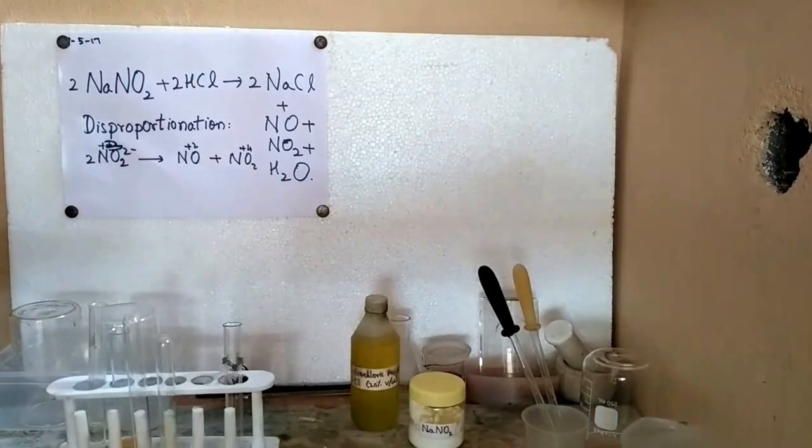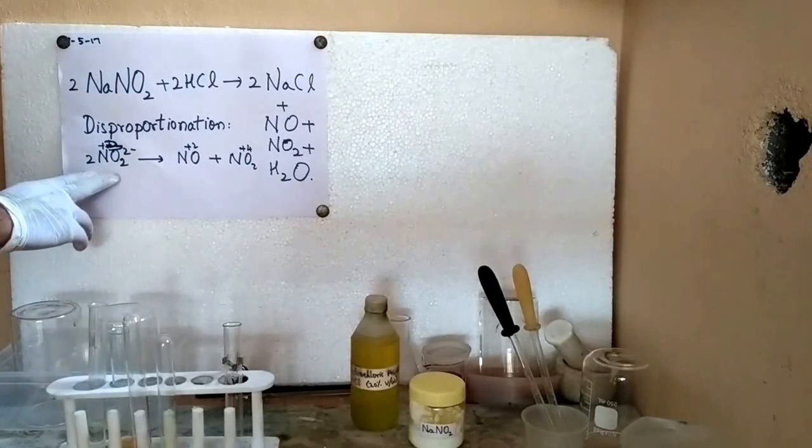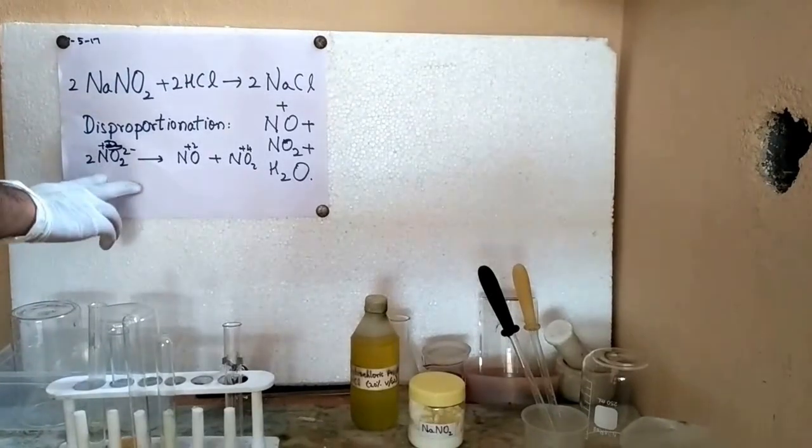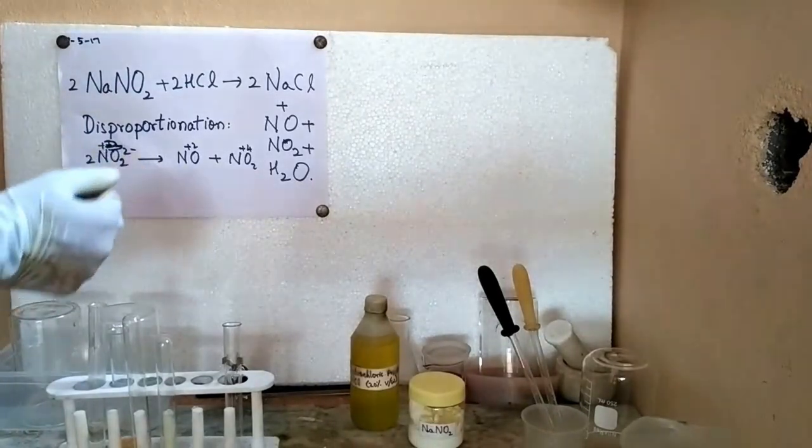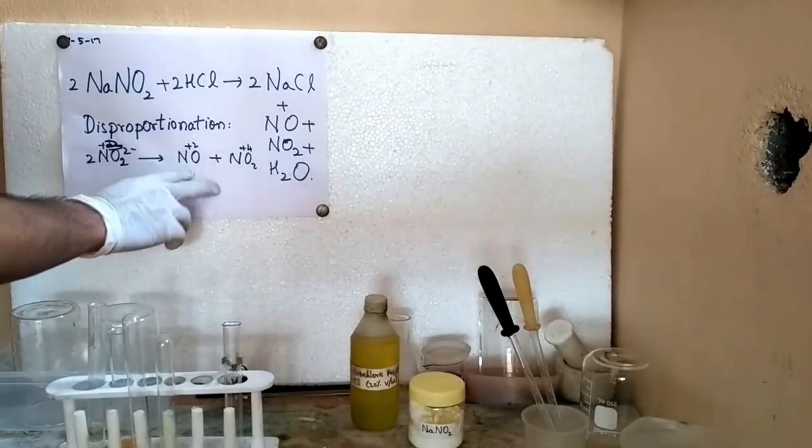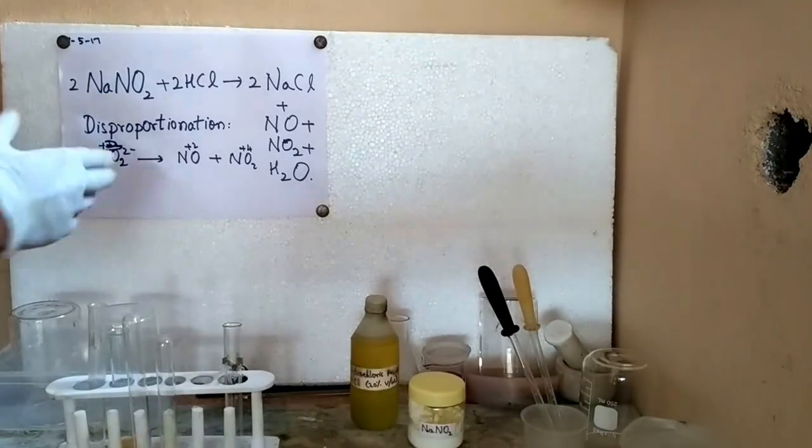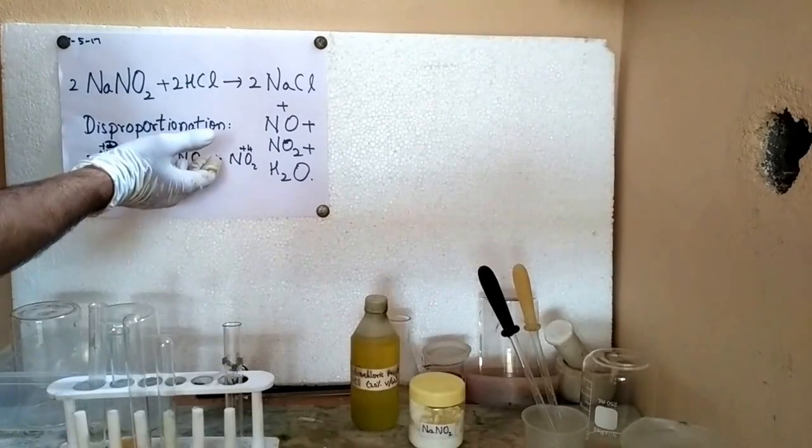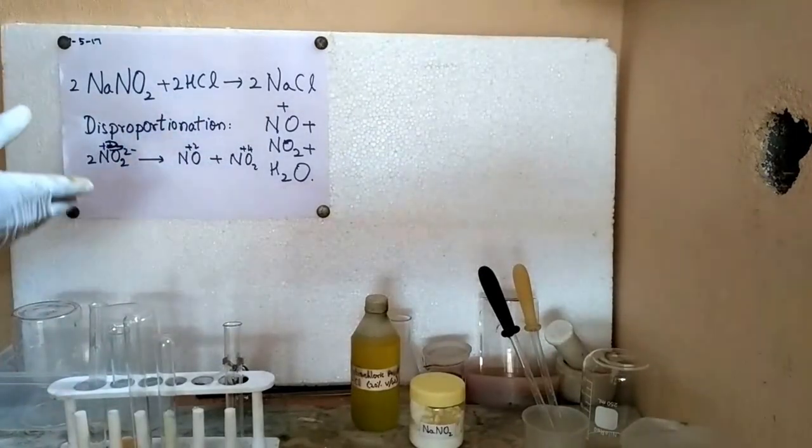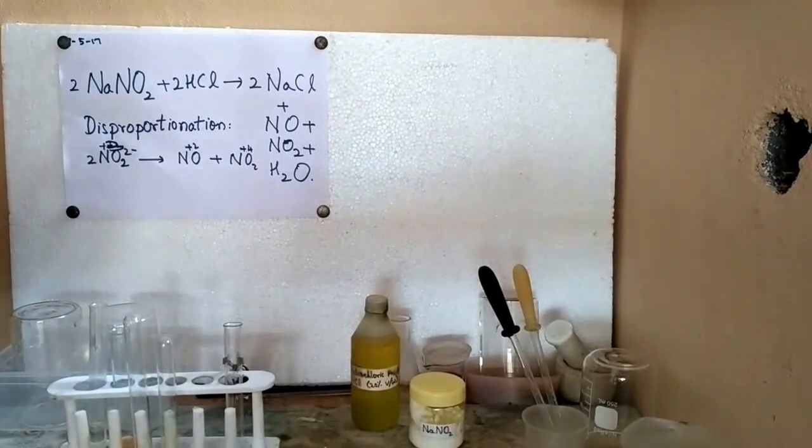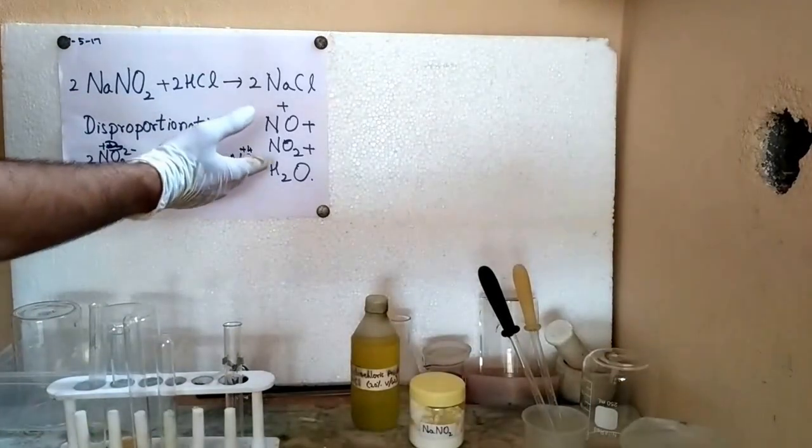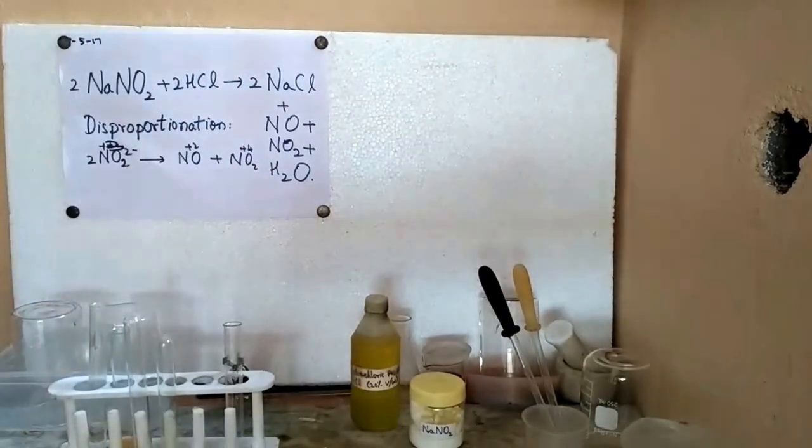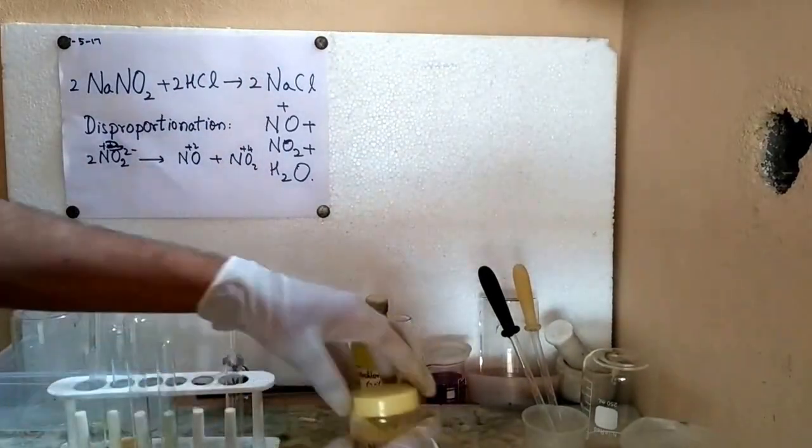And this is a disproportionation reaction. Here in nitrite, the nitrogen is in the plus 3 oxidation state. Here it disproportionates to one oxidation state which is lower than the initial one, in this case it is plus 2, and another oxidation state which is greater than the initial oxidation state, which is plus 4. Plus 2 in the case of nitrogen monoxide and plus 4 in the case of nitrogen dioxide. So let's start with this reaction.